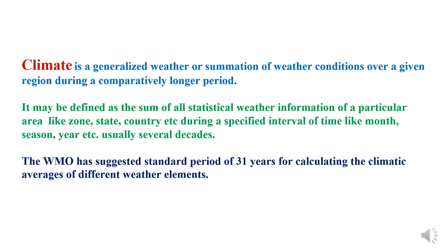Climate is a generalized weather or summation of weather conditions over a given region during a comparatively longer period. Climate is the sum of all statistical weather information of a particular area — like a zone, state, or country — during a specified interval of time such as a month, season, year, or usually several decades. The World Meteorological Organization has suggested a standard period of 31 years for calculating the climatic averages of different weather elements.